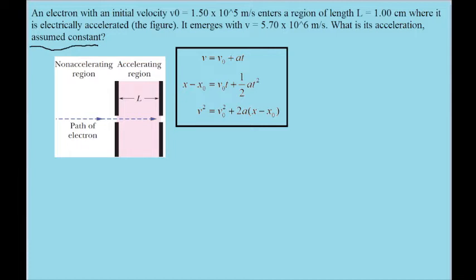The first step of any problem like this is to use our knowns and unknowns to figure out which of the equations will be best to start with. We're looking for acceleration, so we'll want to choose an equation that has the acceleration variable in it, which is all of them, so that doesn't help much.